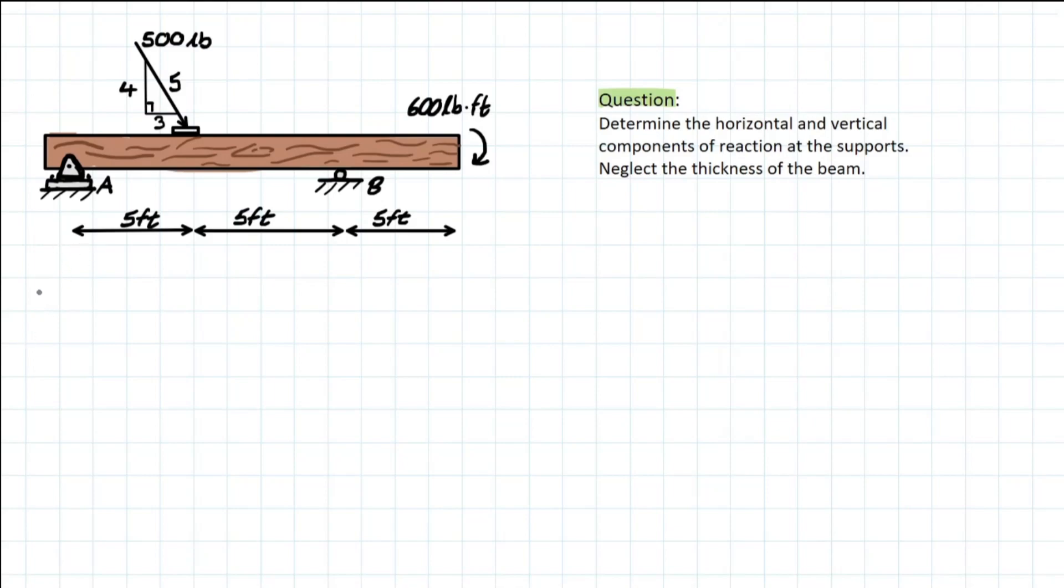Okay, so this is a really good problem because it introduces the pin and the roller, also introduces the application of moment to a member, and it has components of force with this diagonal force of 500 over here. So what do we need to know before we can solve a rigid body problem? And a rigid body is basically just a solid body where deformation is equal to zero. So, what's the first thing we need to know?